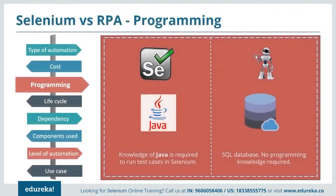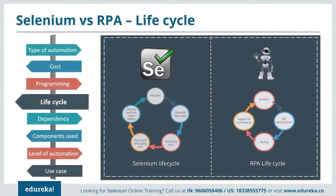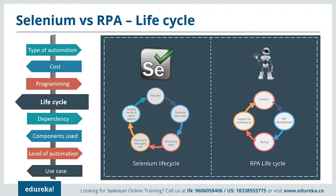Regarding programming knowledge: Selenium does require knowledge of Java to run any test case, whereas RPA does not require any coding knowledge as it deals with backend processes and database operations. On lifecycle: Selenium's lifecycle is more complex, involving test planning, generating basic test cases, enhancing cases, running and debugging tests, and analyzing and reporting defects. RPA deals with just four processes — analysis, bot development, testing, and supported maintenance.